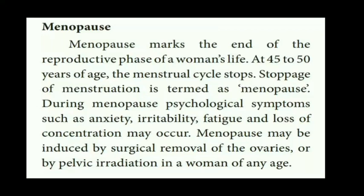Menopause marks the end of the reproductive phase of a woman's life. At 45-50 years of age, the menstrual cycle stops, and this stoppage of menstruation is termed menopause. During menopause, psychological symptoms such as anxiety, irritability, fatigue, and loss of concentration may occur. Menopause may also be induced by surgical removal of the ovaries or by pelvic irradiation.